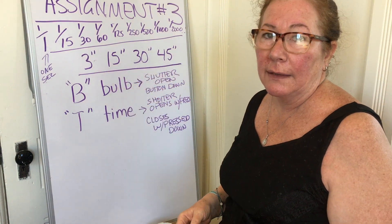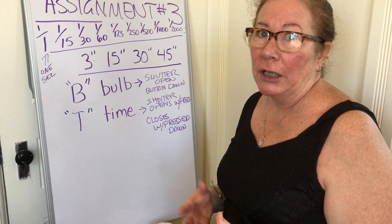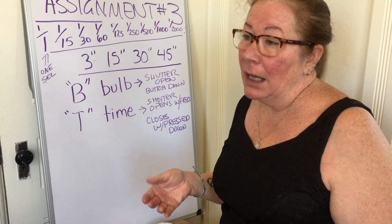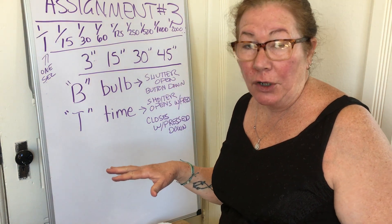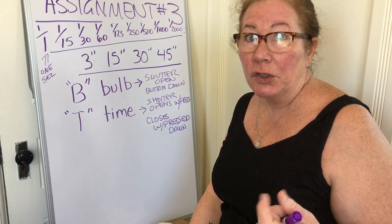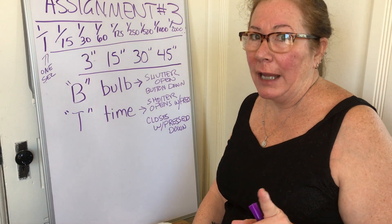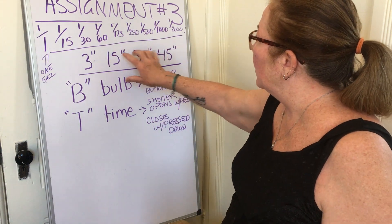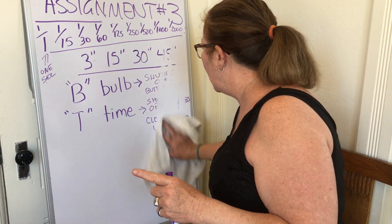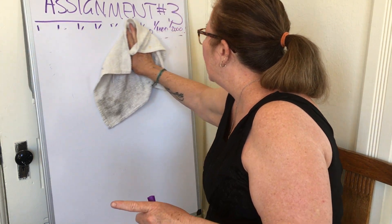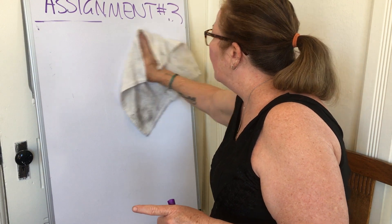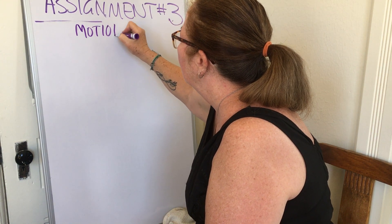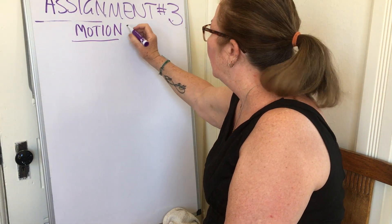Normally we'll use the fractional shutter speeds; the Bulb and Time settings are for specialty shots — night shots of things that aren't moving, in darkened rooms. Our eyes adjust to tiny amounts of light over time, and so do our cameras. Very slow shutter speeds are only used for non-moving objects, otherwise you get what we call motion blur — which is exactly what we're going to try in assignment three.